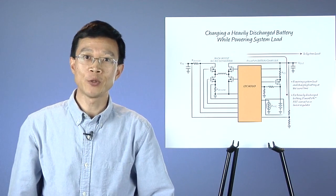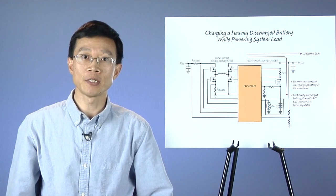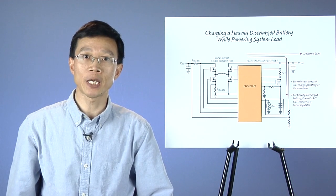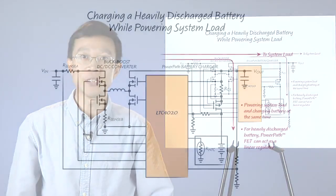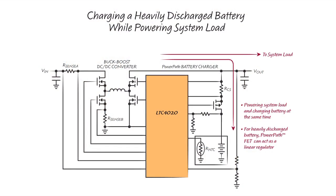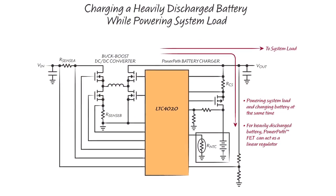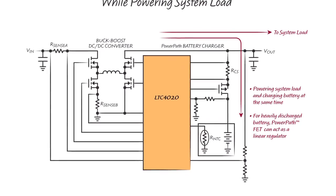The LTC4020 is able to power the system load and charge the battery at the same time. During the majority of normal battery charge cycle, the power pass FET remains on with a low impedance, connecting the battery and the buck-boost converter output.